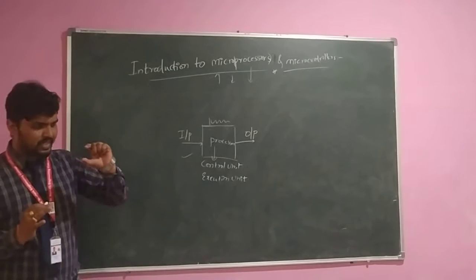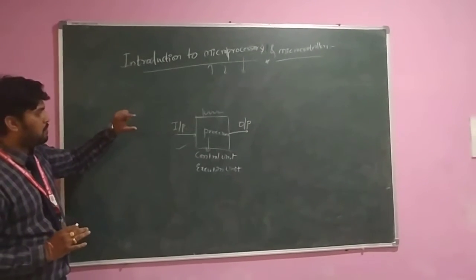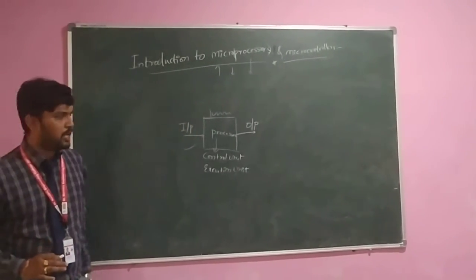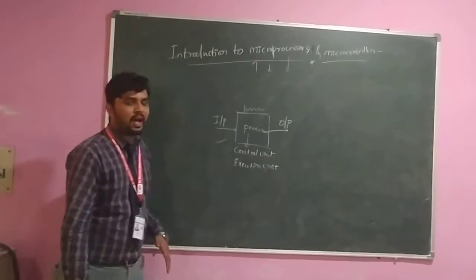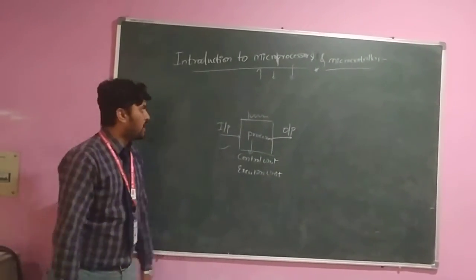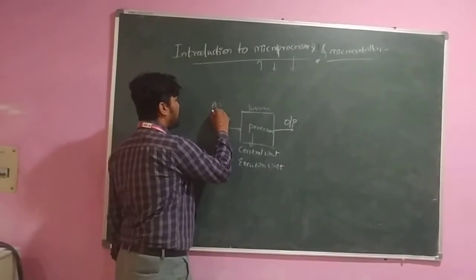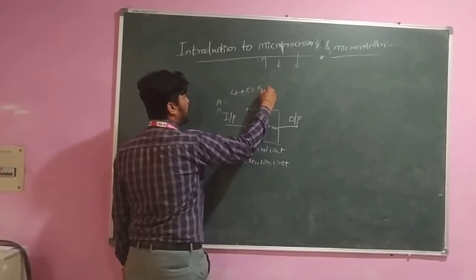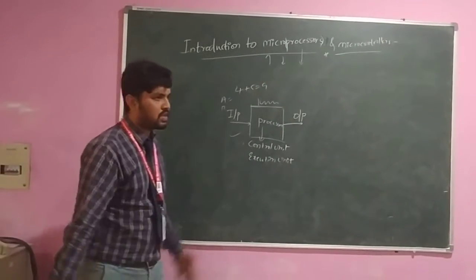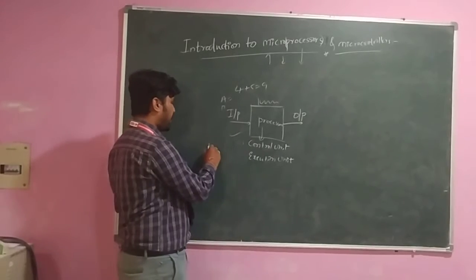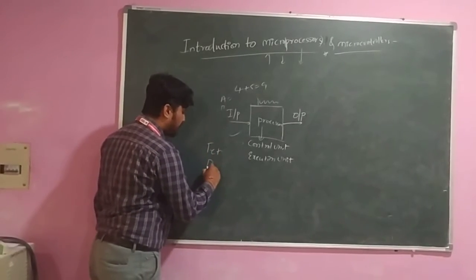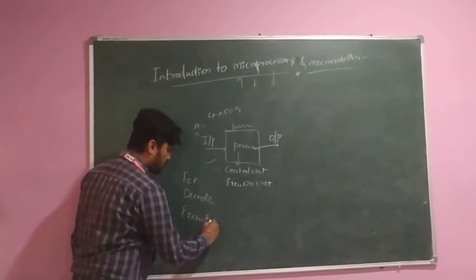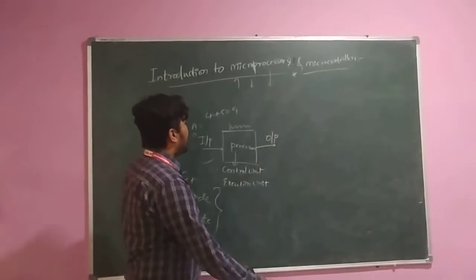Now coming to the microprocessor — 'micro' means small. It is a tiny-sized processor which can process all the data given to it and produce an output. For example, if I want to add two numbers, A and B — say 4 plus 5 — we get a result of 9. How does this processing happen in the microprocessor? It first fetches the data, then decodes it, and then executes it.